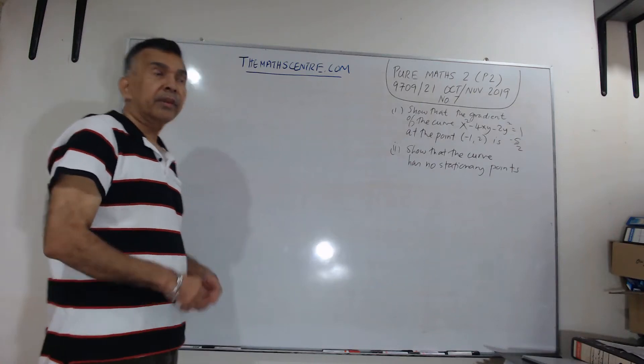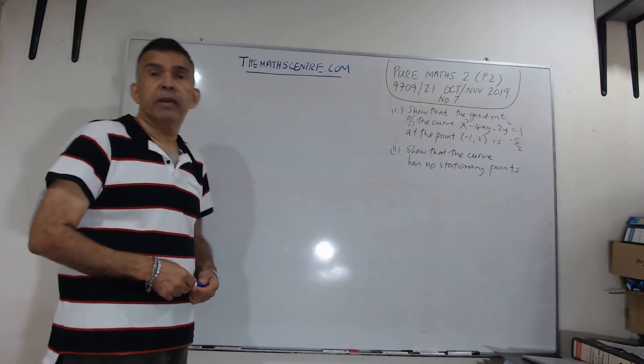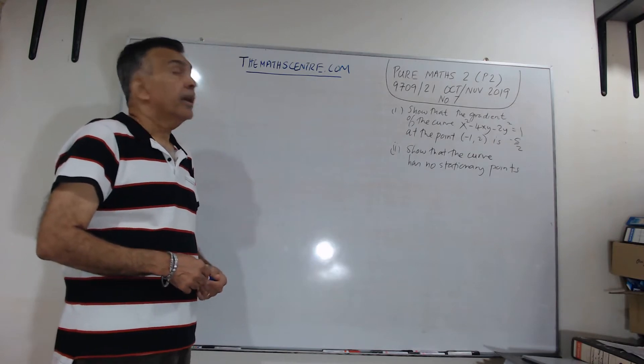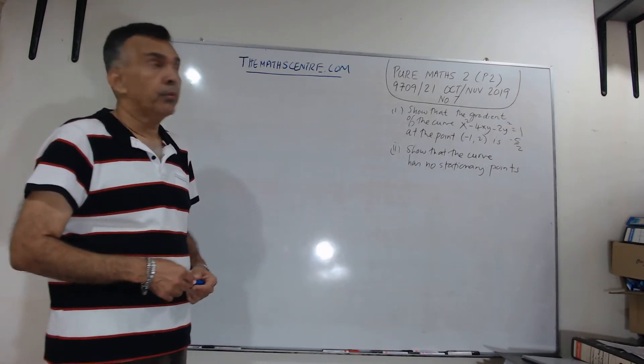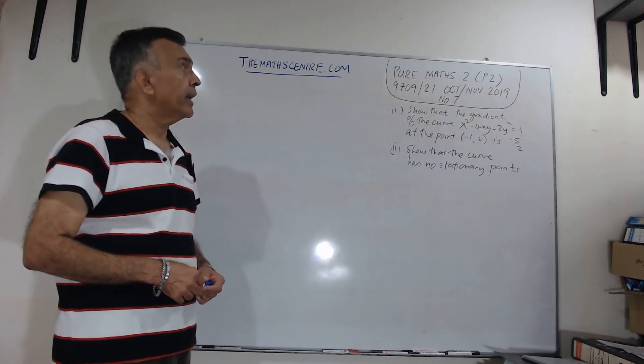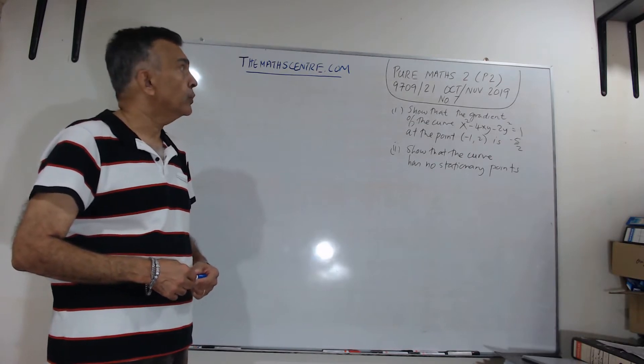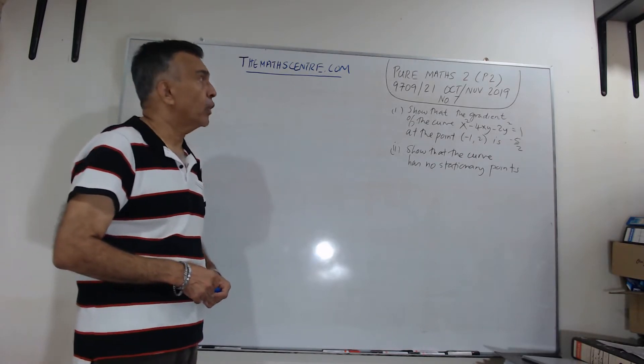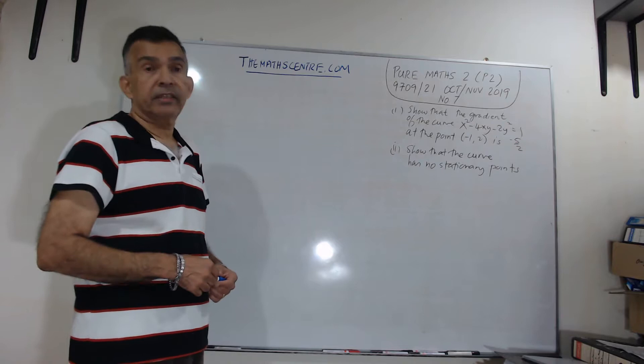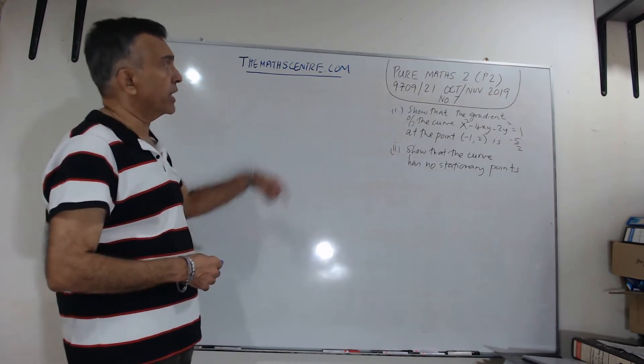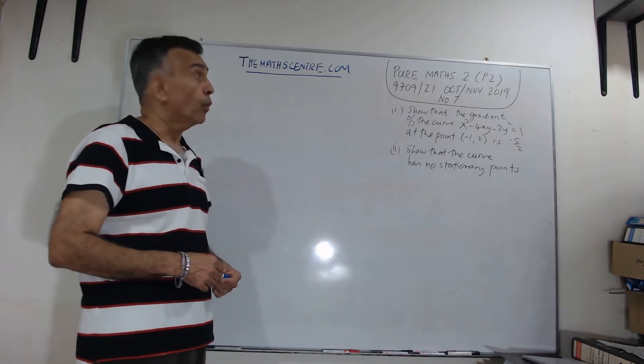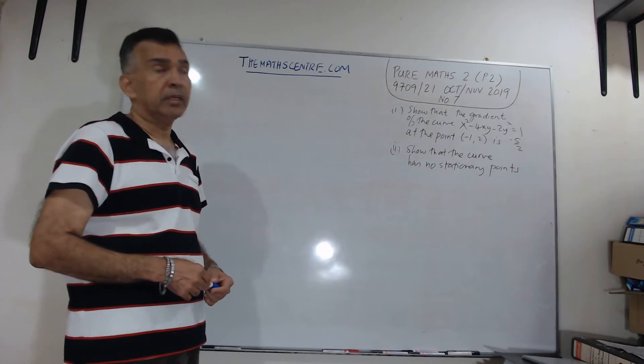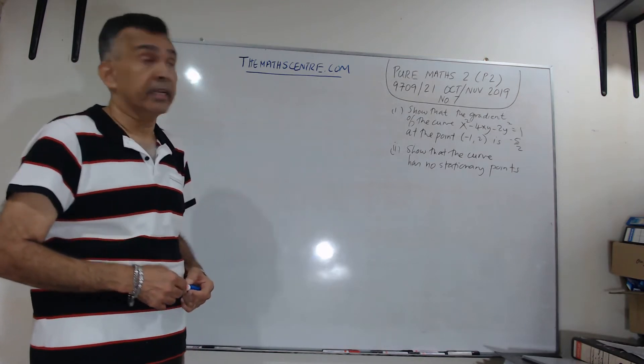Hi, welcome to TheMathsGuide.com. In this video, we are going to look at a P2 exam question, PNOMS2 9709. The code is 9709. It is paper 21, October, November 2019.